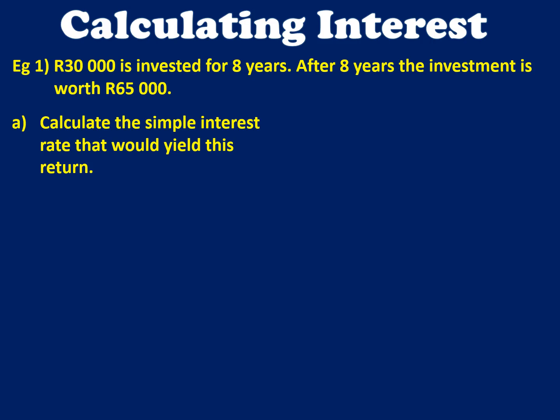So in this example, when 30,000 Rand is invested for 8 years, after 8 years the investment is worth 65,000 Rand. We want to calculate the simple interest rate that would take 30,000 Rand to 65,000 Rand. So 30,000 Rand is what goes into your account, and 65,000 Rand is what you get out at the end. So 65,000 will be your A value, 30,000 will be your P value, and we're going to substitute them in with 8 years.